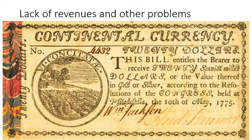At one point in the 1780s, someone proposed an amendment to the Articles to allow Congress to create taxes in order to pay off its debt. Every state except Rhode Island agreed to the amendment, but because it was required that you have unanimous agreement, the amendment idea failed. This showed everybody a couple of things: most people realized that the lack of an ability to tax was fatal to the Articles of Confederation. But if only one state refused to change the system, they couldn't change anything — and that was a big weakness.